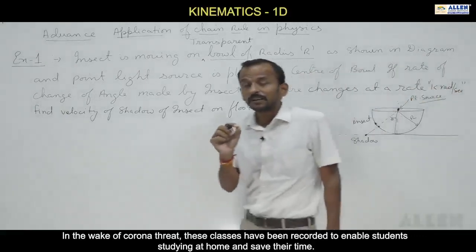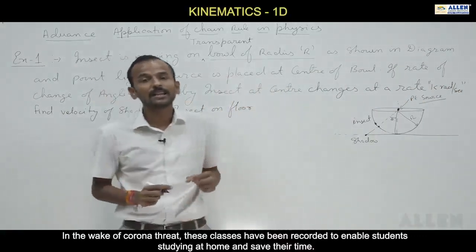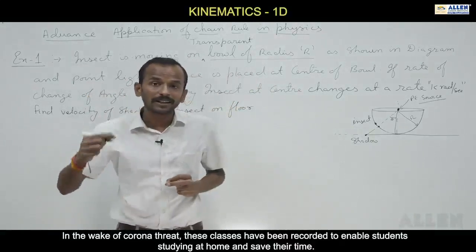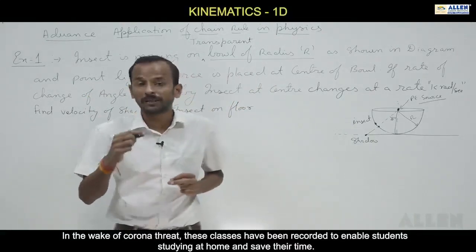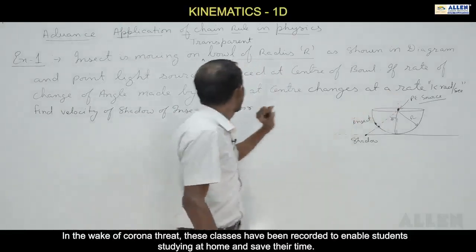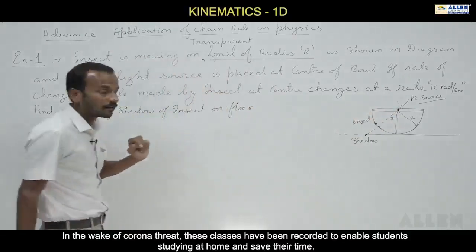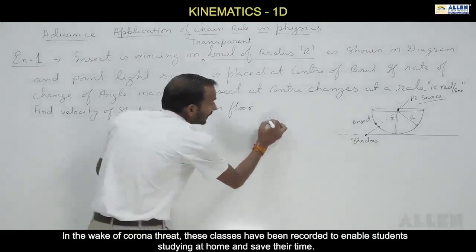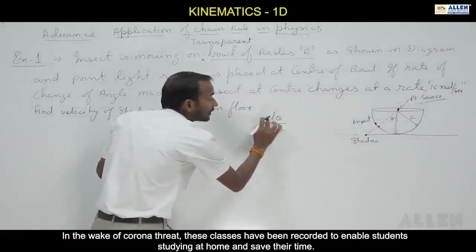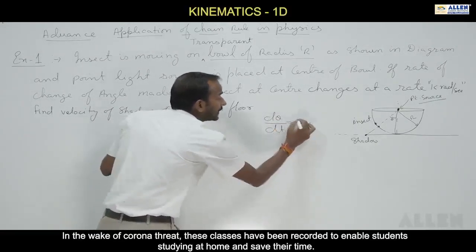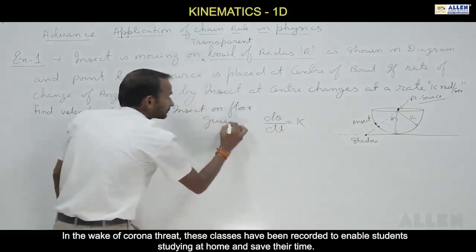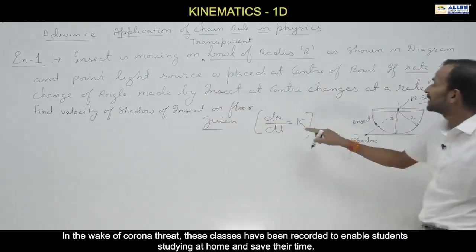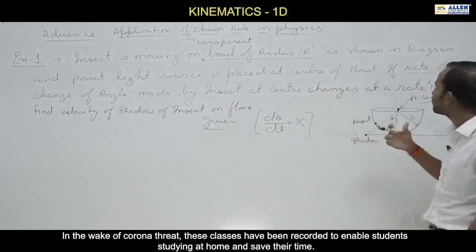What does differentiation mean? The rate of change of any physical quantity with respect to another. 'Rate' itself means with respect to time. The angle theta made by the insect changes at the rate of k radians per second.